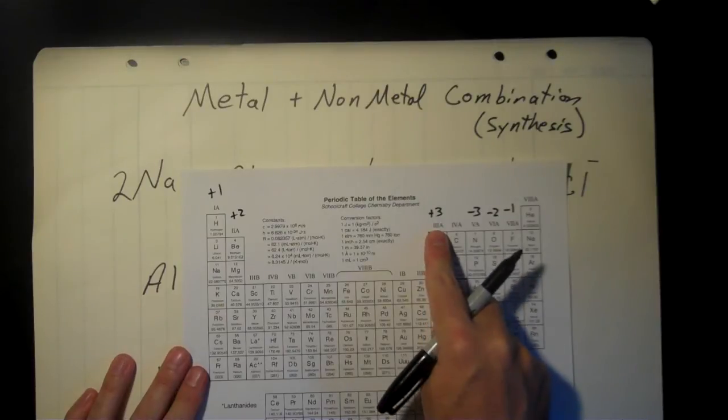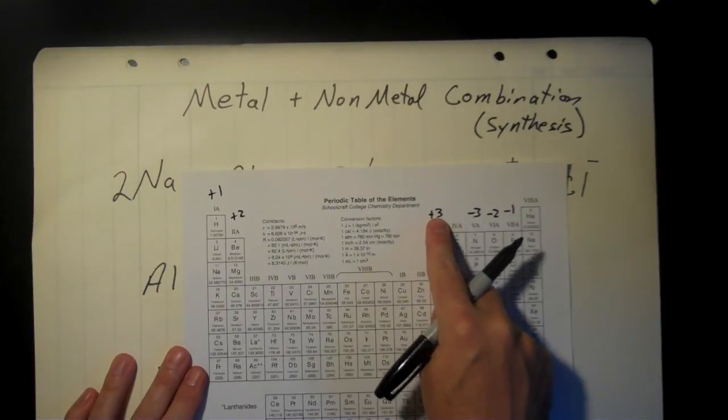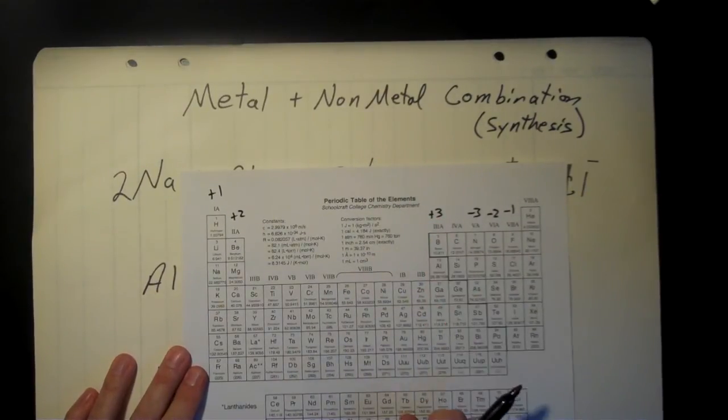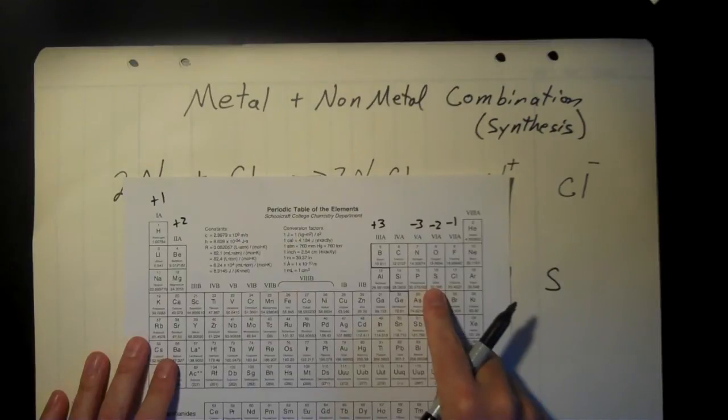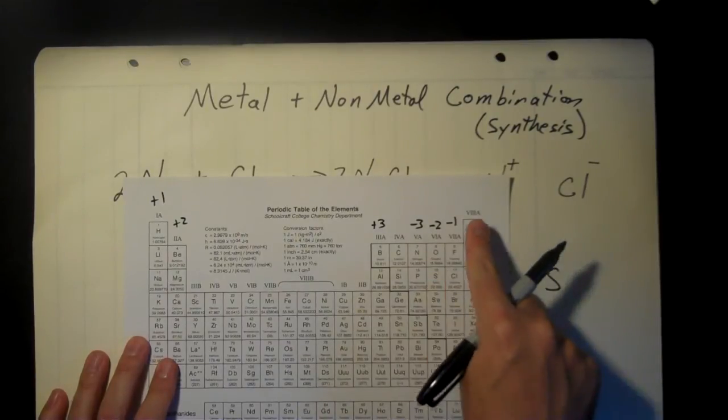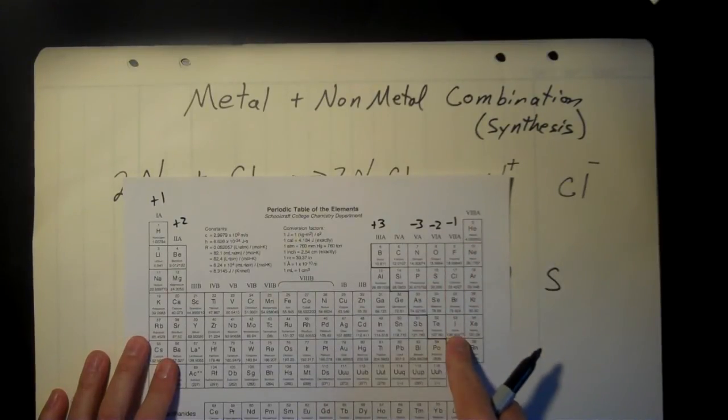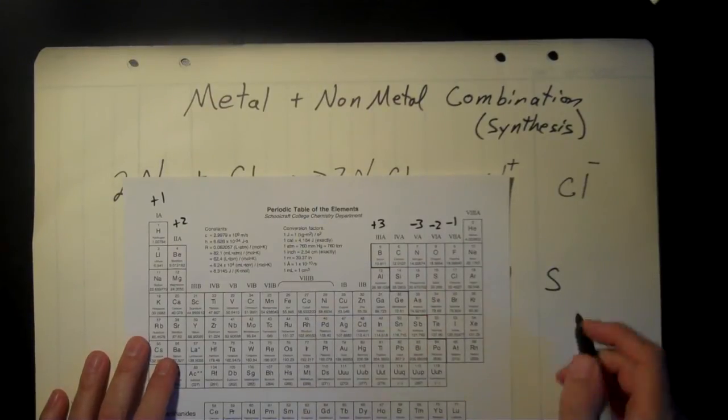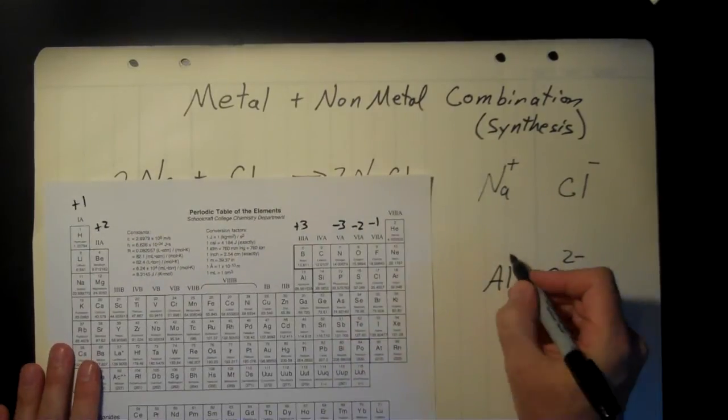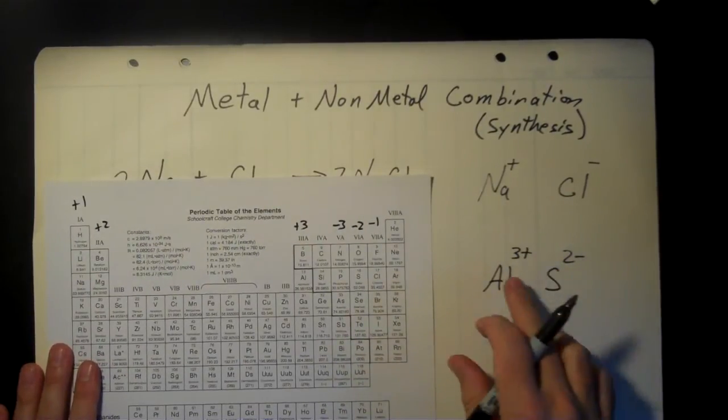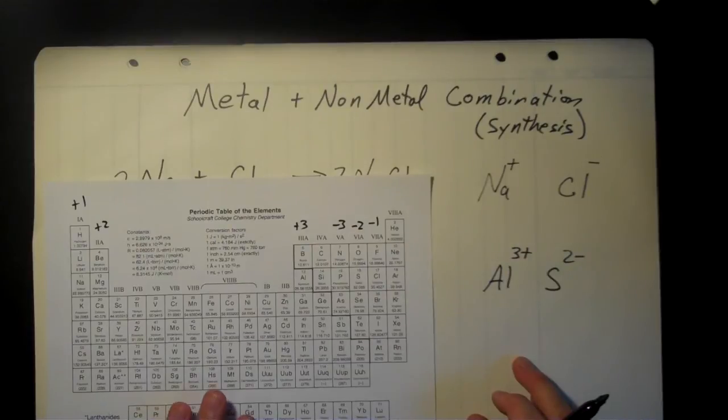Here's aluminum. It's in column 3A, or sometimes we call this column 13, and all the elements there are going to have typically a plus 3 charge in that column. And compare that to sulfur. Sulfur is right here in this column. Same column as oxygen. It goes 0 for the noble gases, negative 1 for fluorine's column, negative 2 for oxygen's column. So there's sulfur right there with a negative 2.